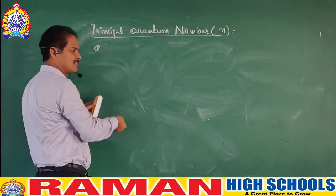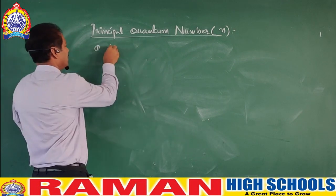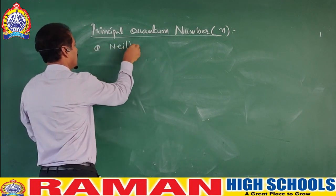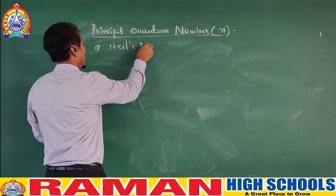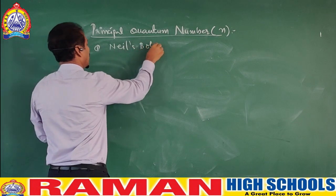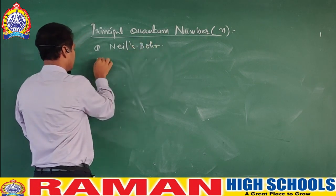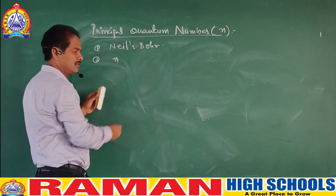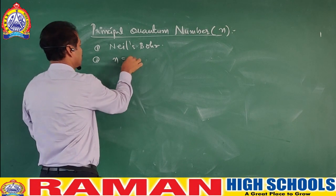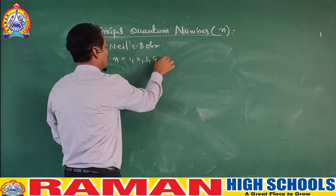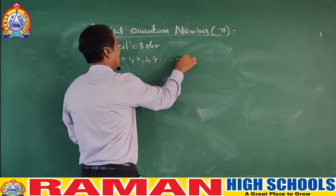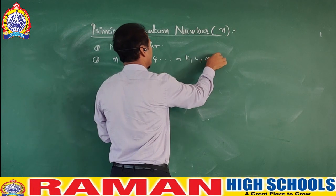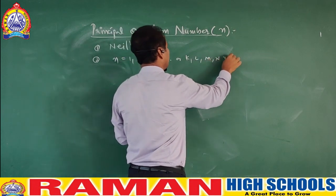The principal quantum number was proposed by Niels Bohr. It is indicated by the letter N, where N equals 1, 2, 3, 4 — corresponding to the shells K, L, M, N respectively.